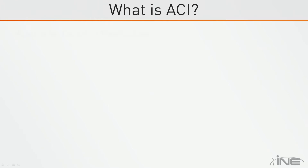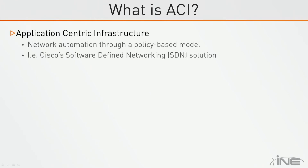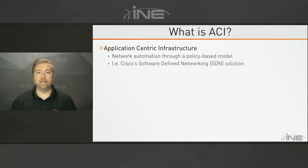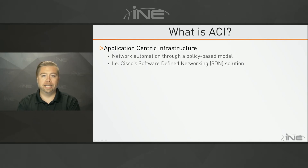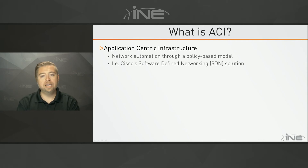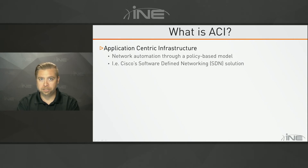First and foremost, what is ACI — Application Centric Infrastructure — specifically what the three letters of our acronym stand for. But in more general terms, what ACI really is is Cisco's main solution for software defined networking, or SDN. At the end of the day, we'll see that what the ACI system is doing behind the scenes is nothing really special in terms of other products or offerings out there in the market, but the main advantage is that the system is automated.